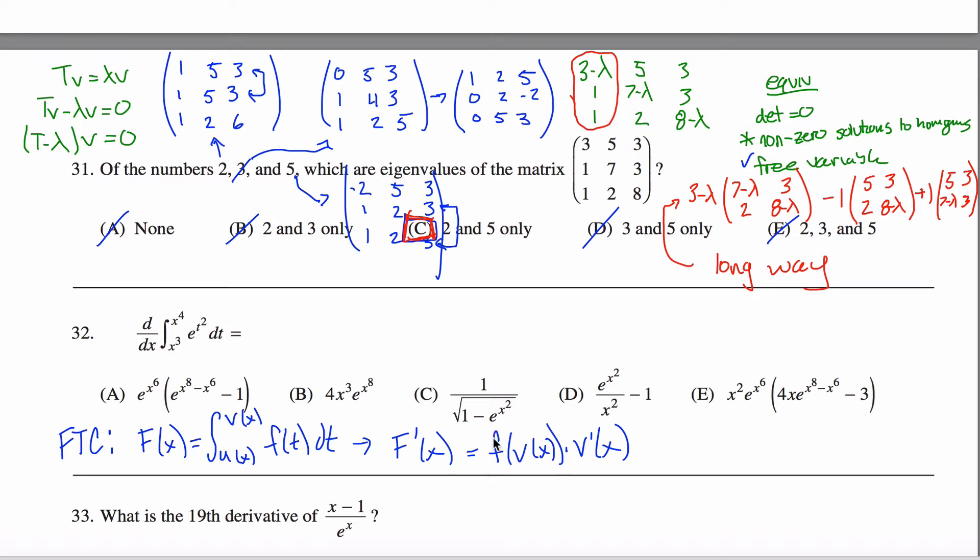And so this is really chain rule what's going on here. I took the derivative of the outside function, I turned the capital F into a lowercase f, and leave the inside function alone, and then multiply that by the derivative of the inside function.